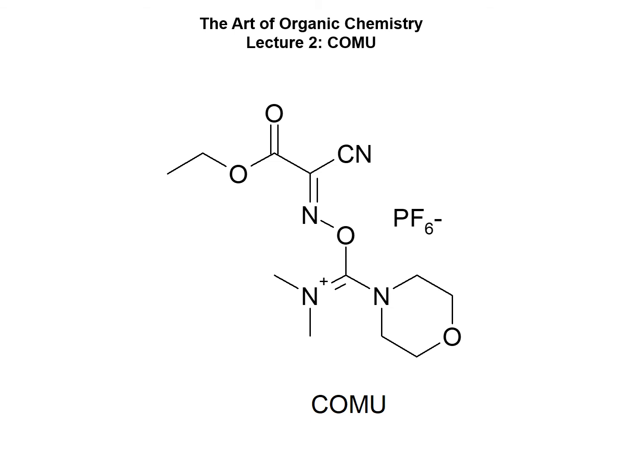The morpholinium group also acts as an internal base, allowing the equivalence of external base to be reduced to 1. In addition, COMU contains the oxyma-leaving group, which has been shown to inhibit racemization by L-Fahim and co-workers. It is important to note that the oxygen in the iminium structure increases the stability of COMU relative to other tetramethyl derivatives. Since COMU lacks the benzotriazole moiety, a predictable autocatalytic decomposition is not observed.